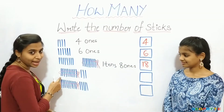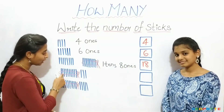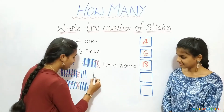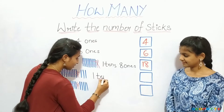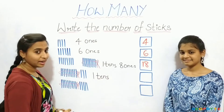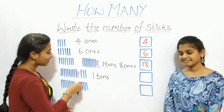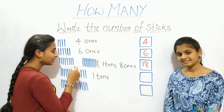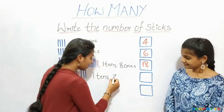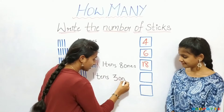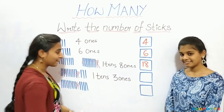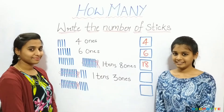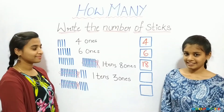See kids. We already have a bundle of ten sticks. Let us write one tens. And we count these sticks. One, two, three. That is three ones. One, three — thirteen. Let us write thirteen.